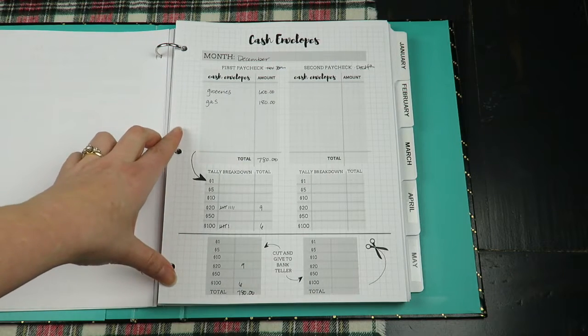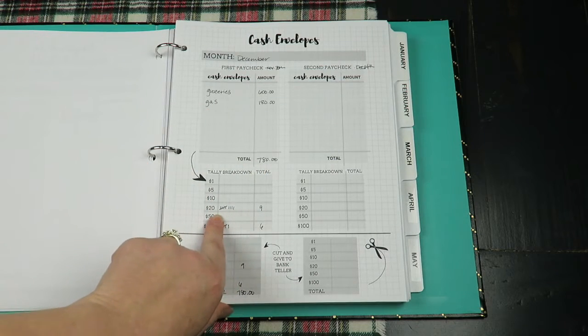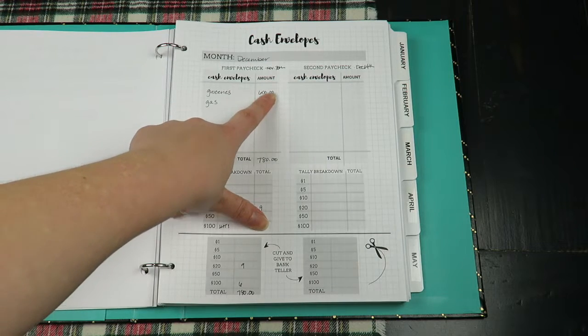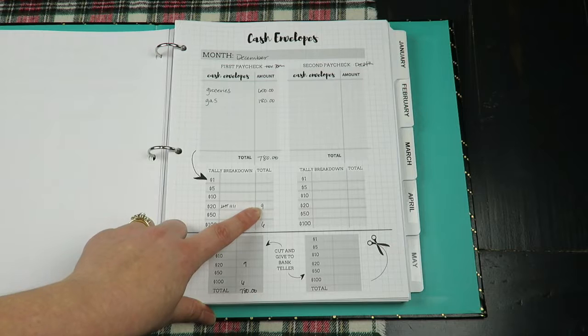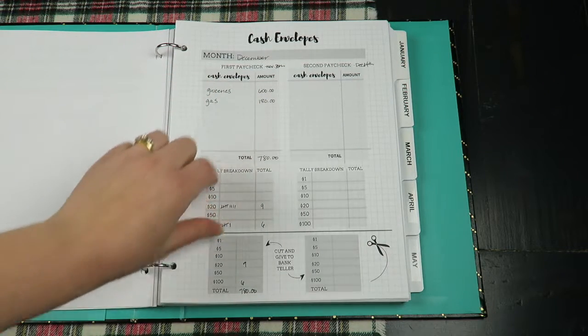We're just writing that down. When we are funding cash envelopes like crazy, this list will be bigger, but right now we're tightening down so we're not. But anyway, equals 780 dollars. Then you go down here and you just run a tally sheet. Groceries, we want in twenties, so we take 600 divided by twenty dollars, tally nine marks, and that equals nine twenty bills.